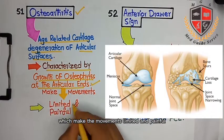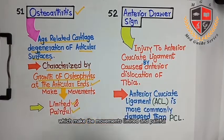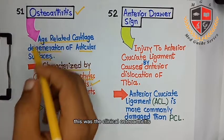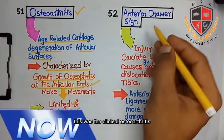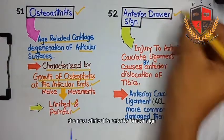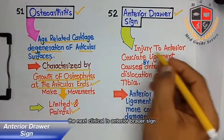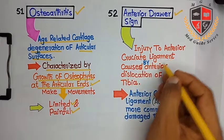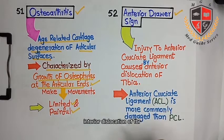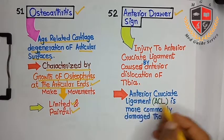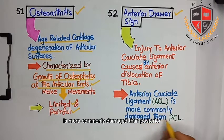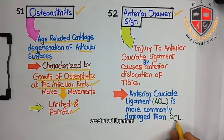Osteoarthritis is characterized by growth of osteophytes at the articular ends, which make the movements limited and painful. The next clinical is anterior drawer sign — injury to the anterior cruciate ligament caused by anterior dislocation of tibia. The anterior cruciate ligament is more commonly damaged than the posterior cruciate ligament.